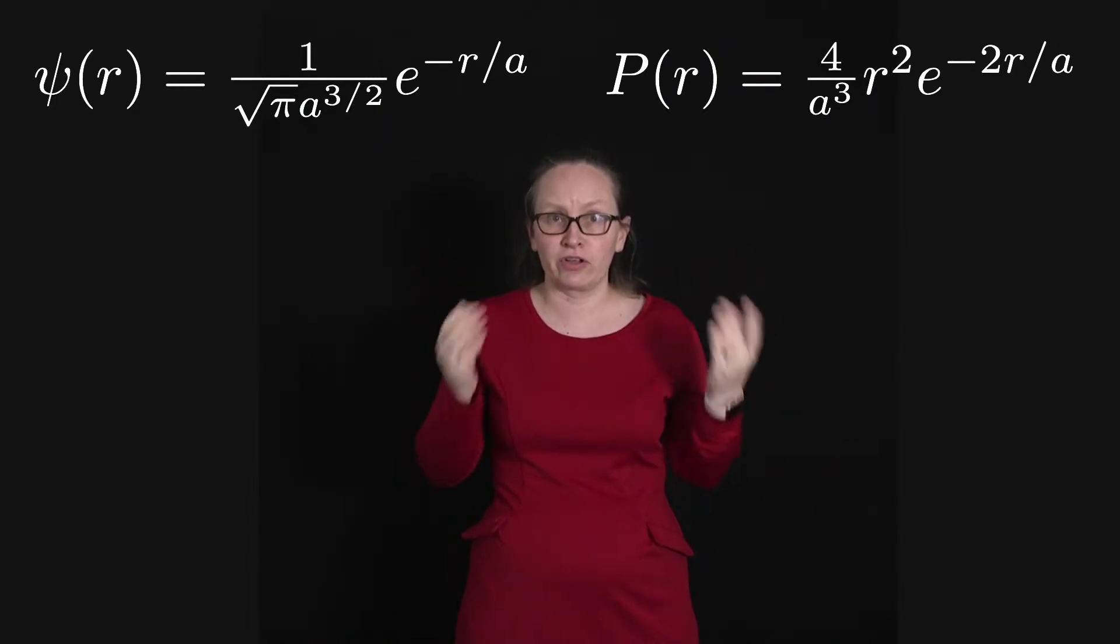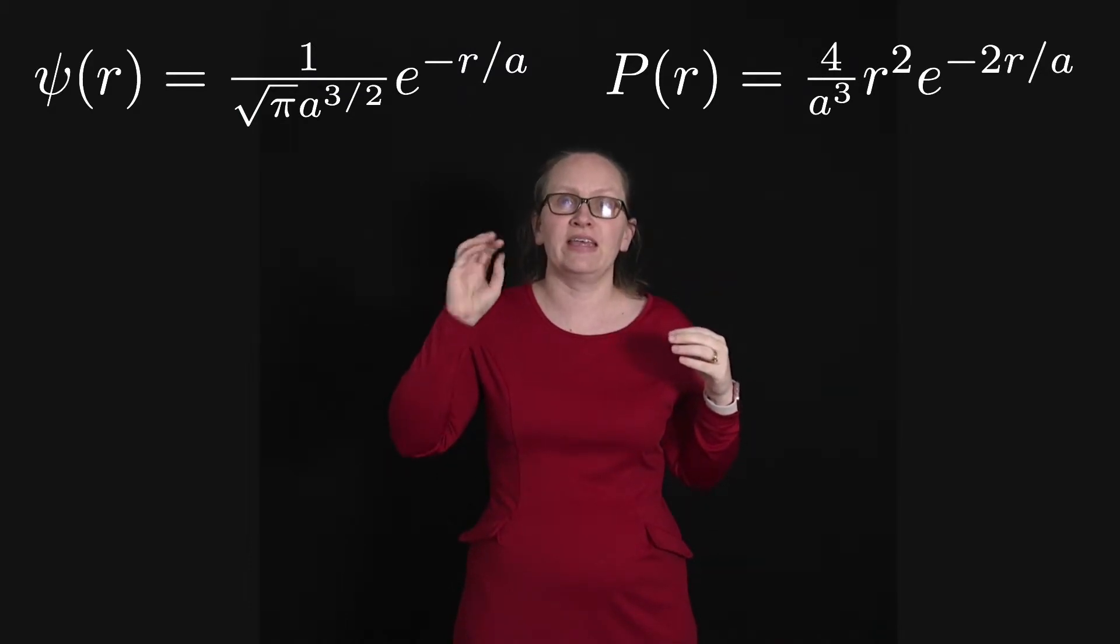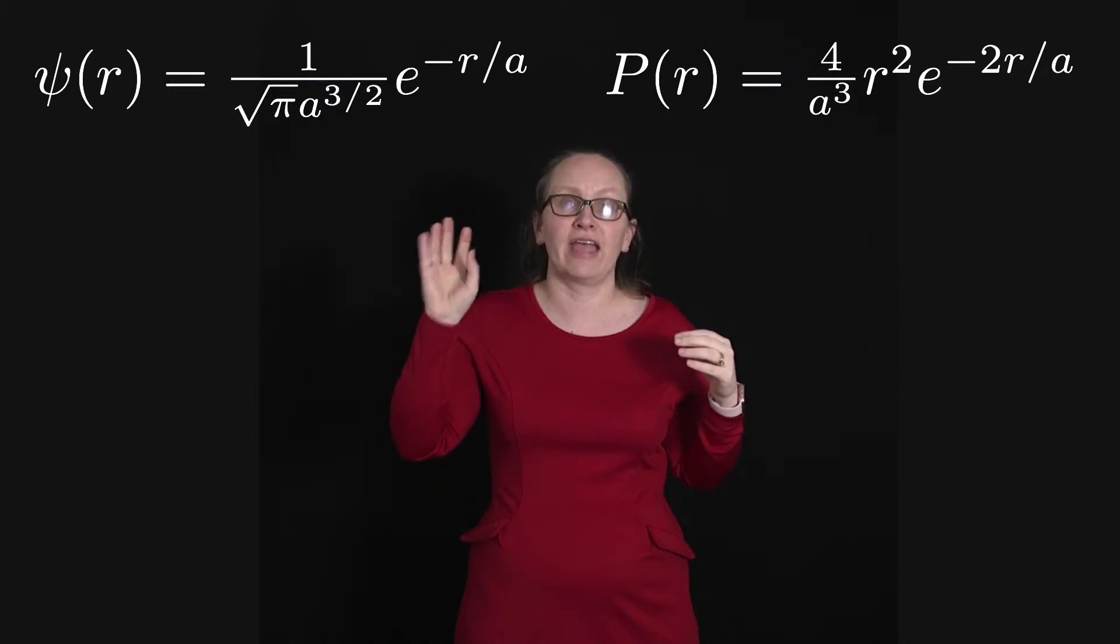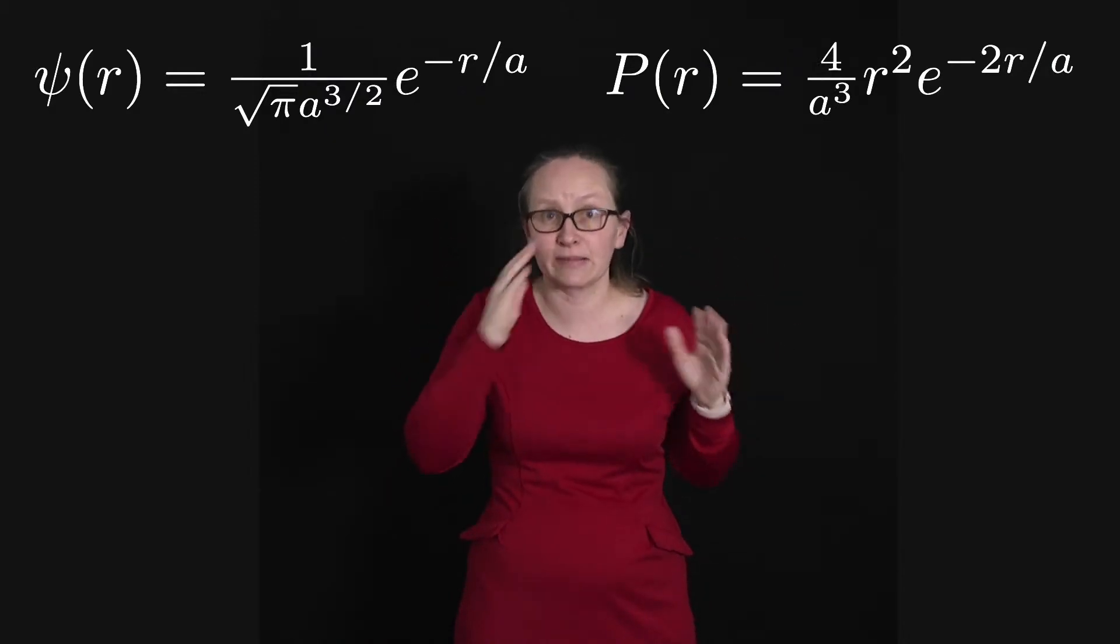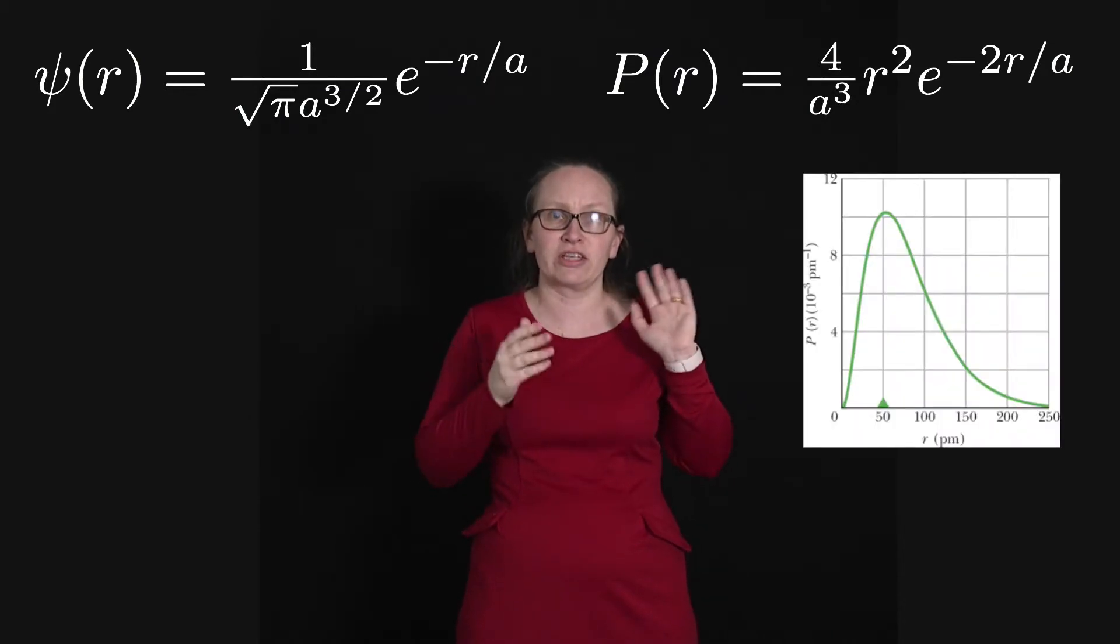So it turns out that for the ground state, the probability P of r is given by 4 over a cubed times r squared e to the minus 2r over a, where a again is the Bohr radius. So you can see a graph of that function here.